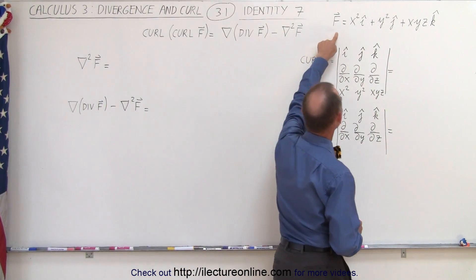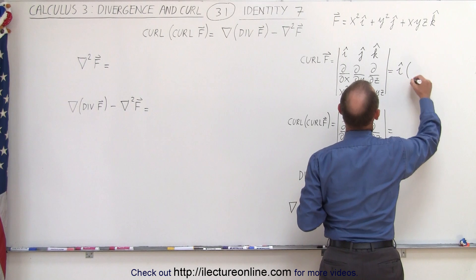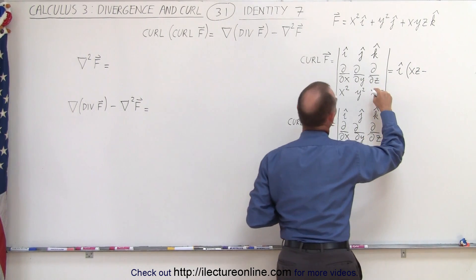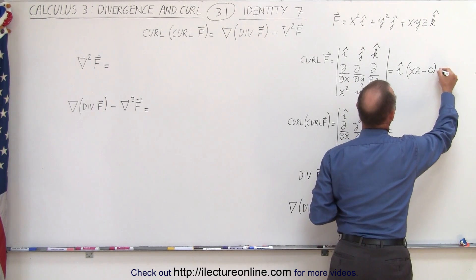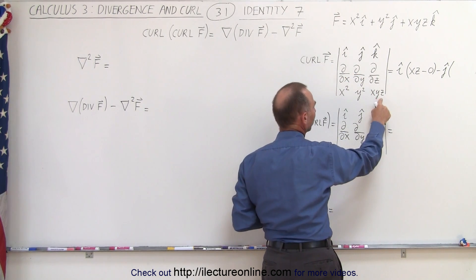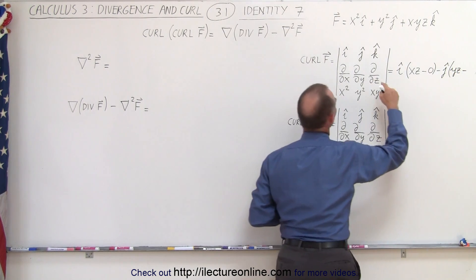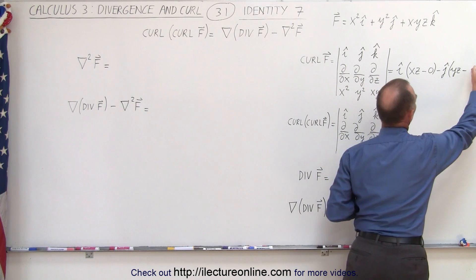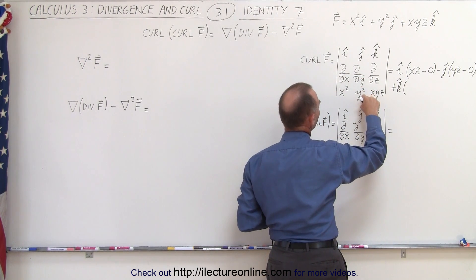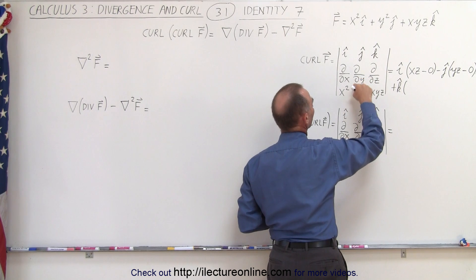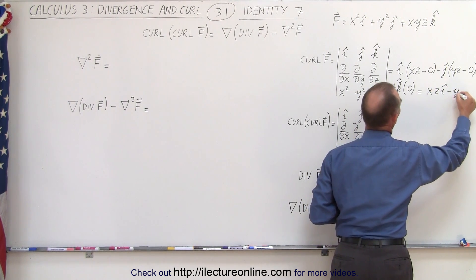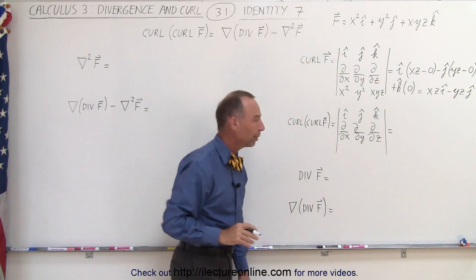We're going to take the curl of the vector field. The I component will be the partial derivative with respect to Y, which gives X times Z, minus the partial derivative with respect to Z, which is zero. The J component will be the partial with respect to X, which gives Y times Z, minus the partial with respect to Z, which is also zero. The K component gives us the partial with respect to X which is zero and the partial with respect to Y which is zero as well, so there is no K component.